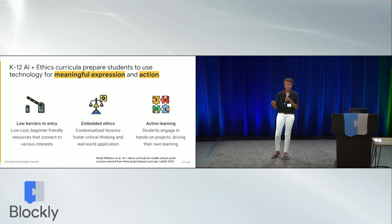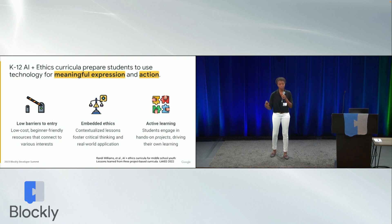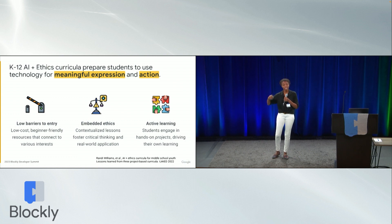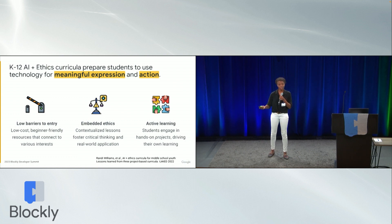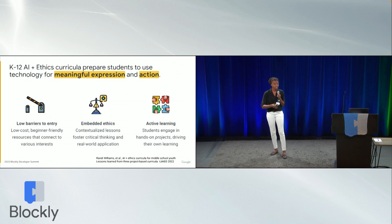The first important design principle is lowering the barriers to entry. A lot of the students we work with don't even know how to program, and we want to get them to the point where they're doing AI — so we think about how to make things low-cost, easy to get started with, beginner-friendly, and actually interesting. Next, we embed ethics into everything we do: lessons are contextualized with real-world impact and societal implications. Finally, active learning — making the learning as hands-on, student-driven, and student-centered as possible.